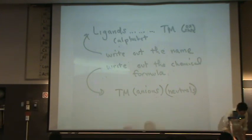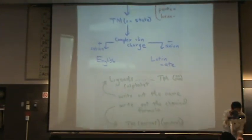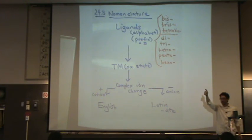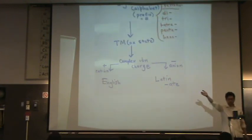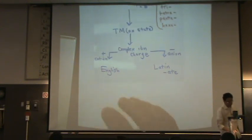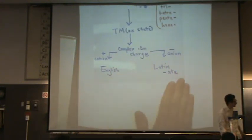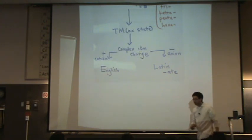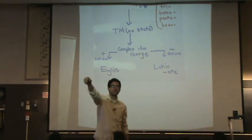Let's take a look at this one more time as an overview. First: ligands, alphabetical order, put on the prefix. Then: transition metal, what's the oxidation state? And then: is the complex ion positive or negative? Positive is English, negative is Latin. If the name does not have a Latin equivalent, then you can name it in English. Alright, that's where we end — I'll see you next Tuesday.